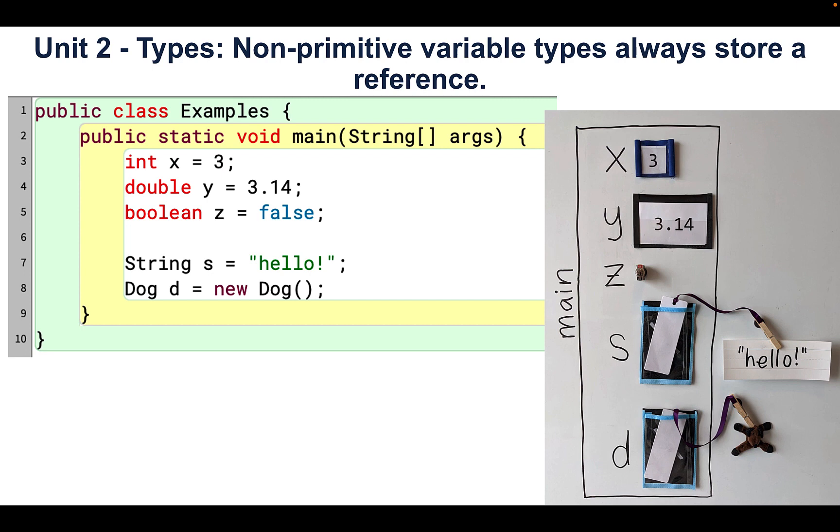The big idea here is that primitive variables always store their value directly in the variable. In contrast, reference variables always store a reference to an object, or later in the course, an array.